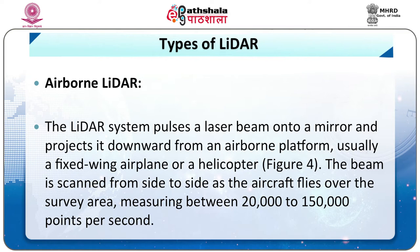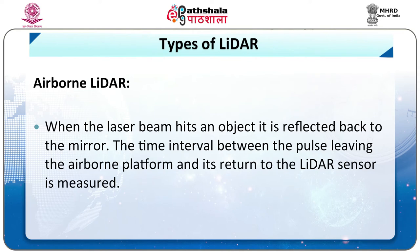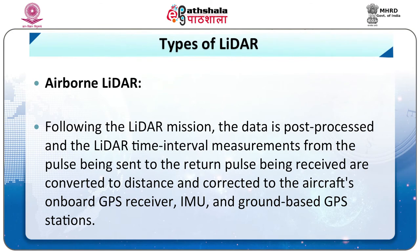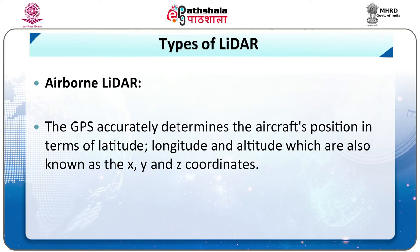The beam is scanned from side to side as the aircraft flies over the survey area, measuring between 20,000 to 150,000 points per second. When the laser beam hits an object, it is reflected back to the mirror. The time interval between the pulse leaving the airborne platform and return to the LIDAR sensor is measured. Following the LIDAR mission, the data is post-processed — the LIDAR time interval measurements are converted to a distance and corrected using the aircraft's onboard GPS receiver, IMU and a ground-based GPS station. The GPS accurately determines the aircraft position in terms of latitude, longitude and altitude, also known as X, Y and Z coordinates.